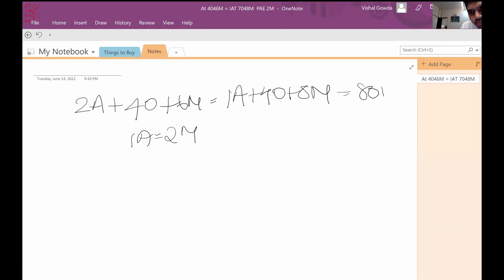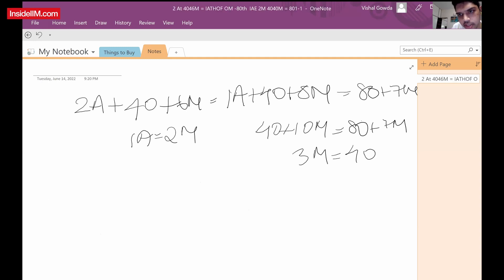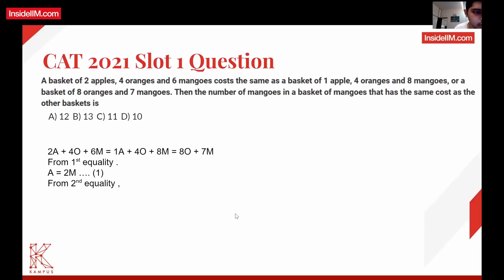The last basket is eight oranges and seven mangoes. This equals four oranges plus ten mangoes after converting one apple into two mangoes, which equals eight oranges plus seven mangoes. So three mangoes equal four oranges. From the first equality you get A = 2M, and from the second 3M = 4O. Convert eight oranges into mangoes: you get six mangoes, so six plus seven is 13.